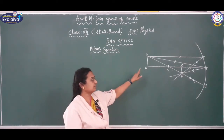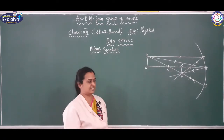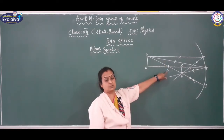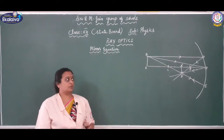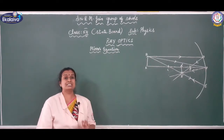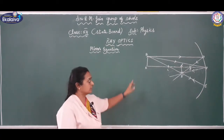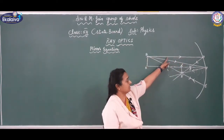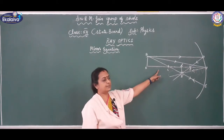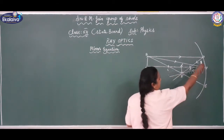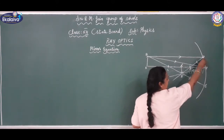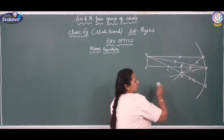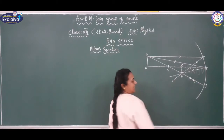I am going to consider three para-axial rays. The first ray is parallel to the principal axis. This ray meets the mirror at point D, gets reflected, and after reflection it passes through the principal focus. So this is the first para-axial ray.